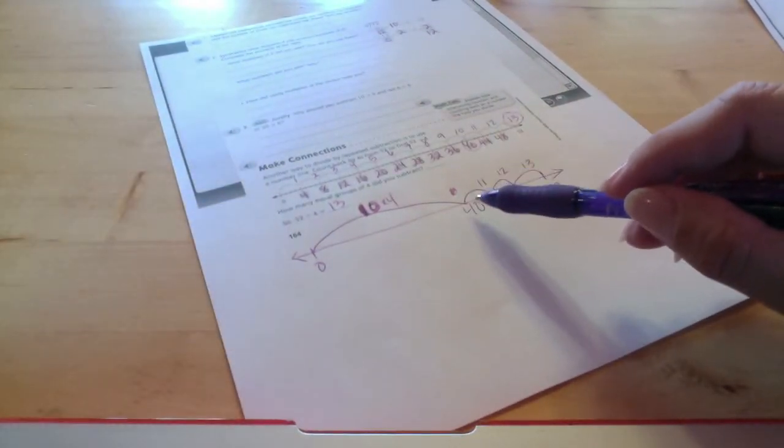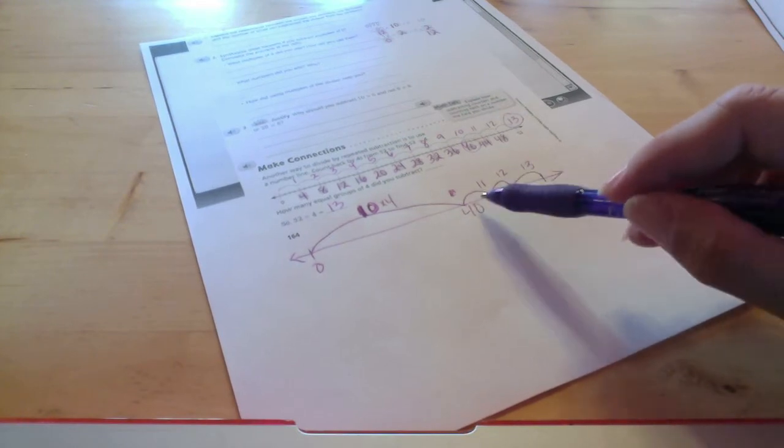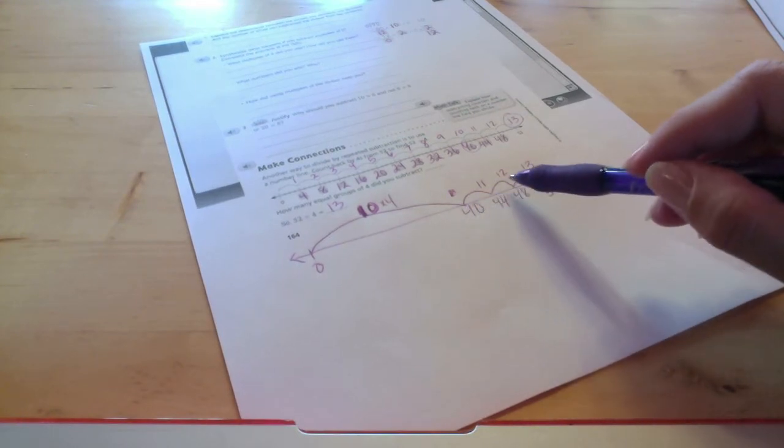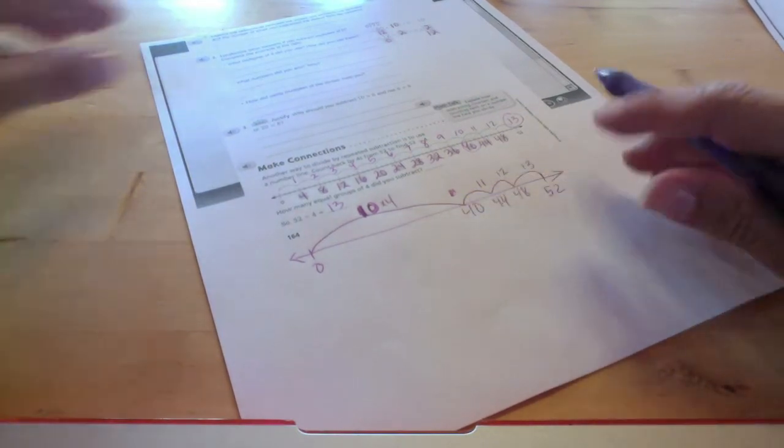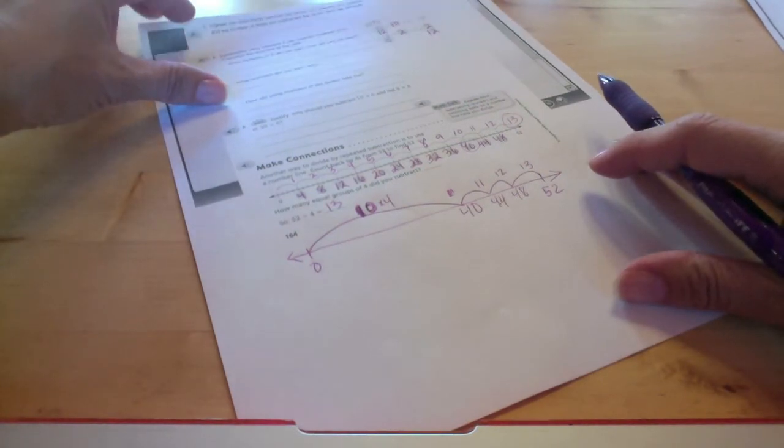And it doesn't have to be perfect. As you can see I've done right here. I'm not counting by fours. I'm not doing four little marks on my number line. I'm just kind of estimating about what that might look like.